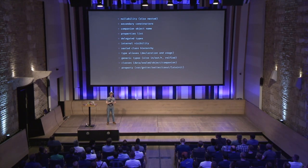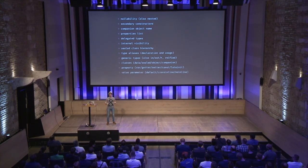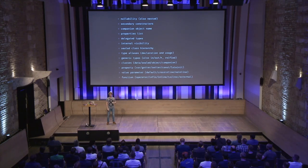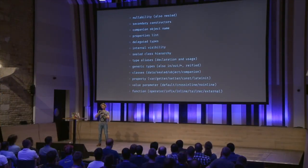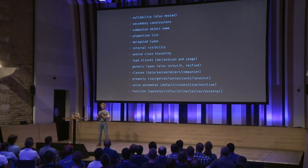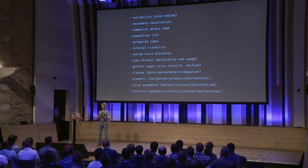You can know properties: what is the var, the getter, the setter, is it a const, is it late init — everything. Value parameters in methods or constructors: is it a default value parameter, is it crossinline, is it noinline, etc. For functions: is it an operator, infix, inline, tail recursive, external, etc. There's more. One downside is that the protobuf is not easy to read, and much of the information is encoded in flags without names attached. Often it's about digging into the Kotlin compiler source to understand what something actually is — it's not scary, but it's not straightforward and documented.